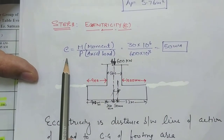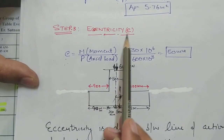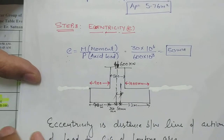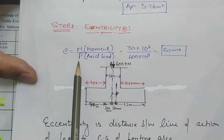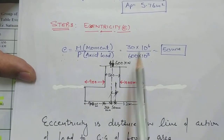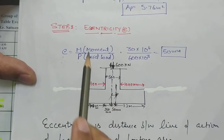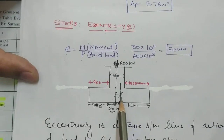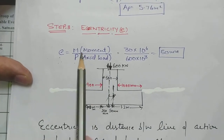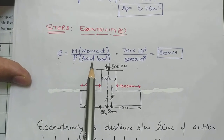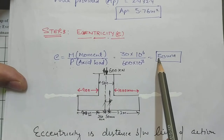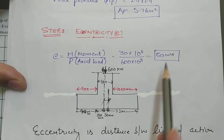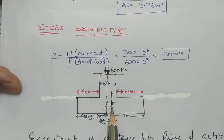To calculate eccentricity, we use the formula: e = M / P, where M is the moment given in the problem and P is the axial load. So e = 30 / 600 = 0.05 m = 50 mm. This means the external load acts 50 mm away from the CG of the footing.